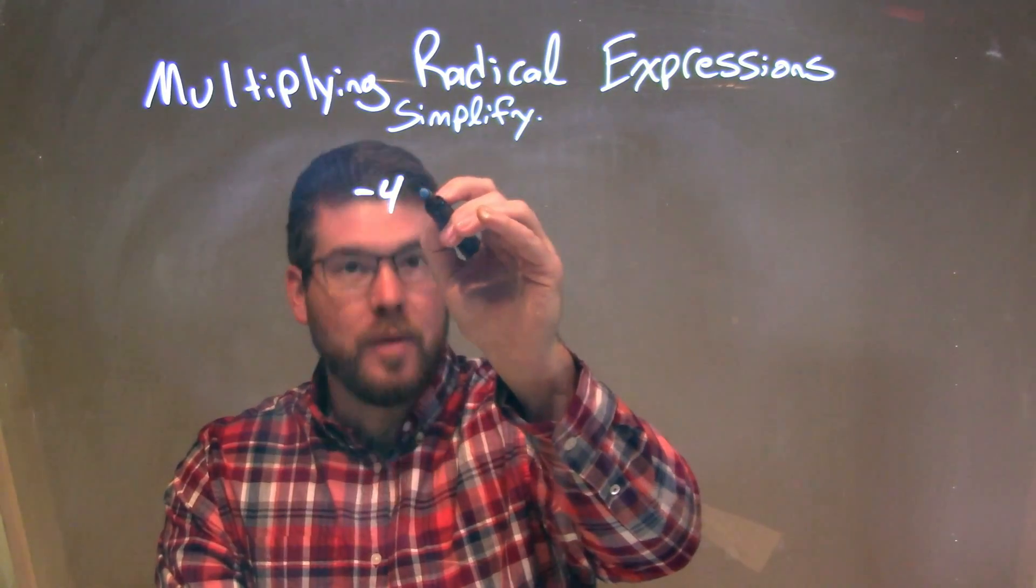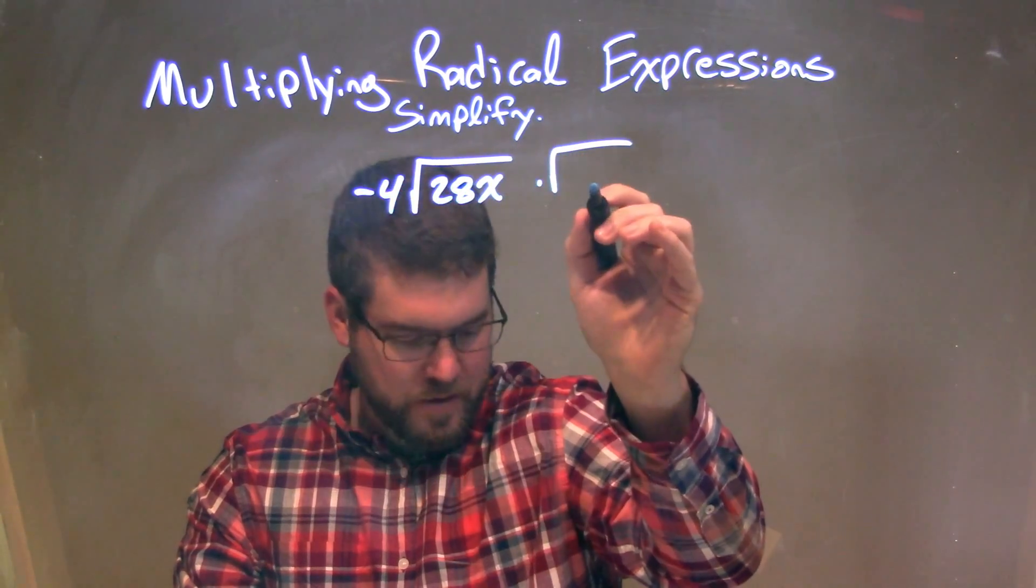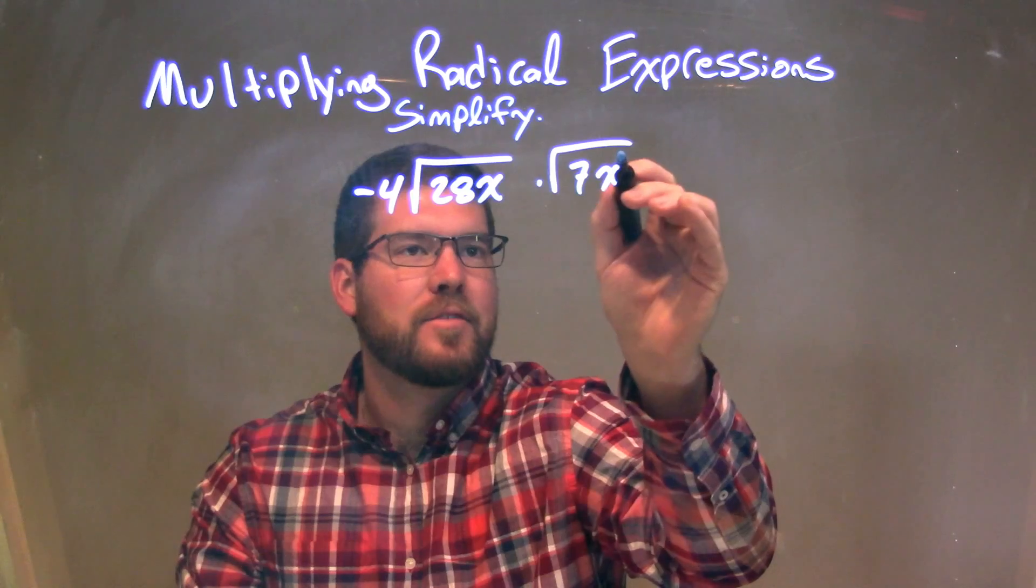negative 4 times the square root of 28x times the square root of 7x to the third.